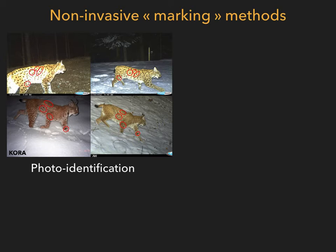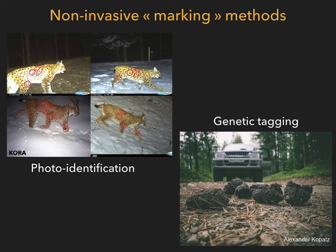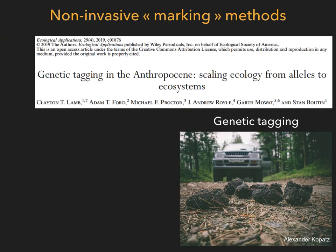These are non-invasive marking methods. One method is photo identification through camera trapping, used on species that have specific coat patterns — like the two lynx in these pictures, where two photos are taken from the same individual. Another technique is genetic tagging: you collect whatever material you can in the field, do genotyping, and identify animals individually using their DNA. I recommend this paper by Lamb and colleagues, in which genetic tagging is very nicely reviewed.